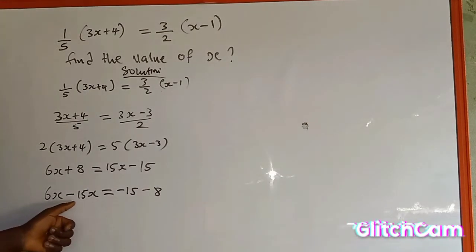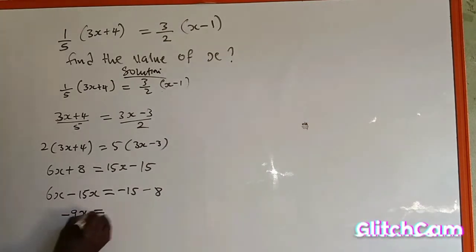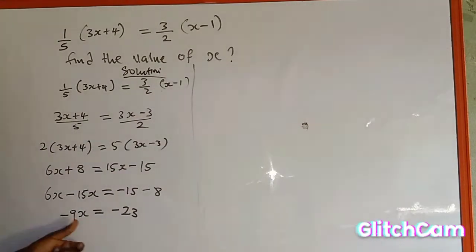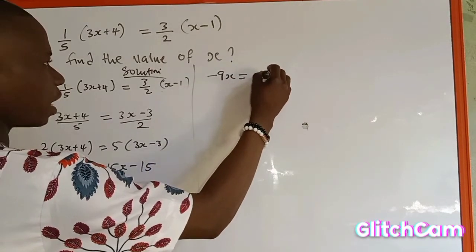So 6s minus 15s is to give me minus 9s, which is equal to minus 15 minus 8 is to give me minus 23. So let's go to the other side. We have minus 9s, which is equal to minus 23.